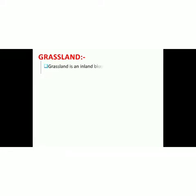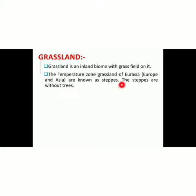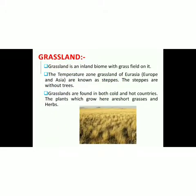Next is grassland — an inland biome with grass fields. Grassland names differ based on location: grasslands in Europe and Asia are known as steppes, which are without trees. Grasslands are found in both cold and hot countries. The plants which grow here are short grasses and herbs. If found in the United States, grassland is known as prairies; in South America as pampas; and in South Africa as savannas.